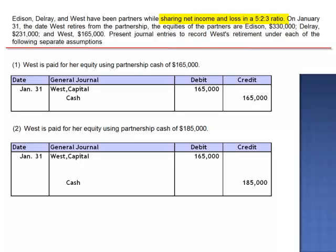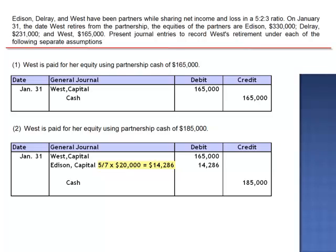Edison, Del Rey, and West had shared partnership profits and losses in the ratio of 5 to 2 to 3. But now that West is retired, it leaves the ratio of just 5 to 2 — 5 sevenths for Edison and 2 sevenths for Del Rey. So Edison's capital account is debited for 5 sevenths of $20,000, which is $14,286, and Del Rey is debited for 2 sevenths of $20,000, which is $5,714.